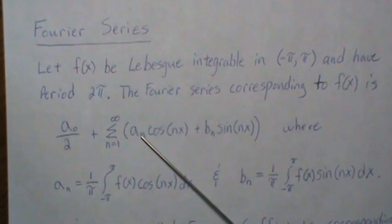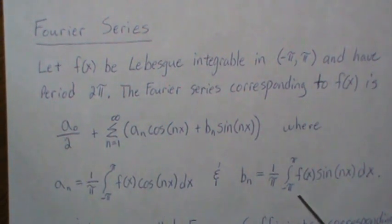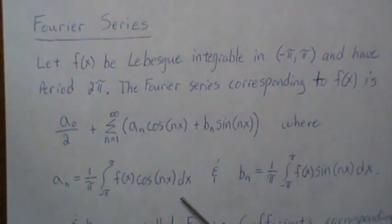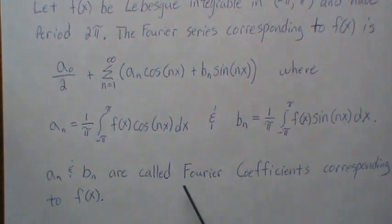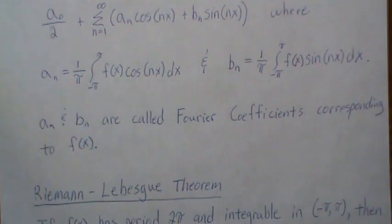a₀/2 + Σ(aₙcos(nx) + bₙsin(nx)), where the coefficients aₙ and bₙ are defined as these integrals, and they're actually called the Fourier coefficients corresponding to our function f(x).